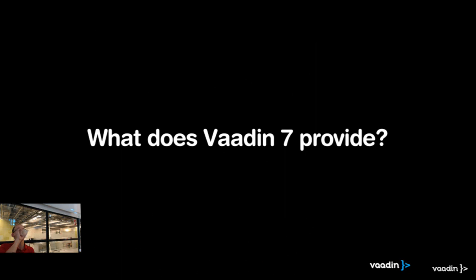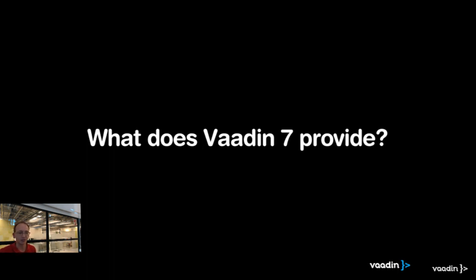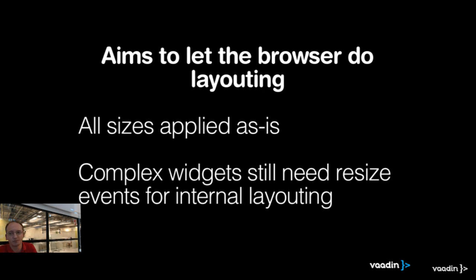That was the history lesson. Now we get to the awesome part — Vaadin 7 is implemented in an awesome way. Vaadin 7 has a totally different approach than Vaadin 6: we don't want to do any calculations. Use CSS. Let the browser do it. It's not our job.